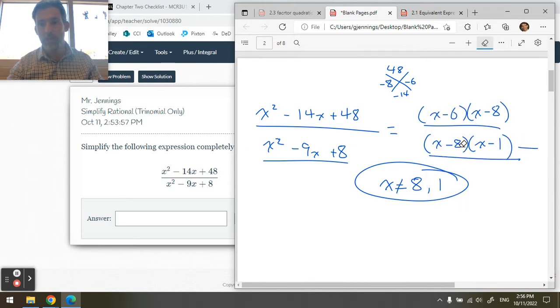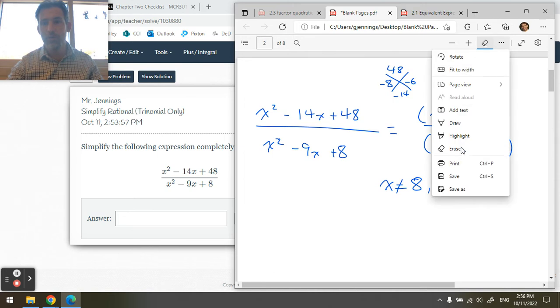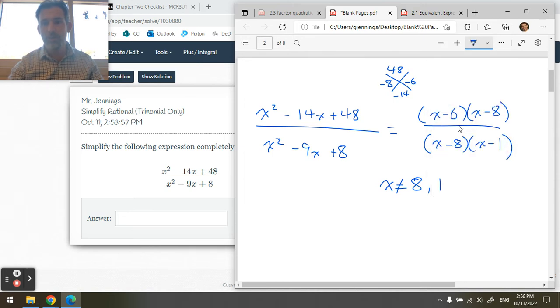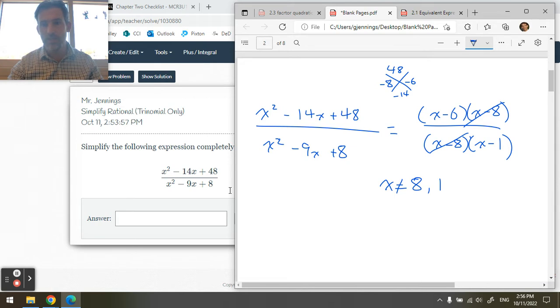Alright, let's erase my junk. And then you want to also, this is the fun part, cancel this factor, cancel that factor. So this is equal to x minus 6 over x minus 1. So you'd write this as x minus 6, put in your brackets, divide by x minus 1, put in your brackets. Enter, enter. Hooray!